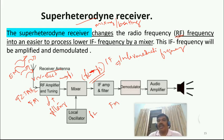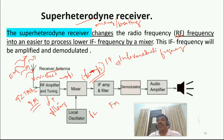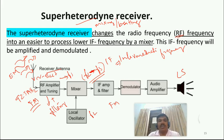After demodulation, the audio FM signal is still weak in strength, so it is fed to an audio amplifier. The audio amplifier amplifies the voice signal, which is finally connected to a loudspeaker. From the loudspeaker we get the output — music, news, road conditions, and so on.